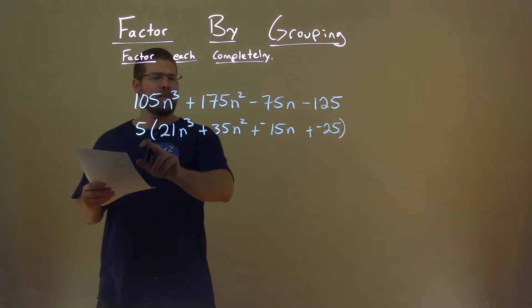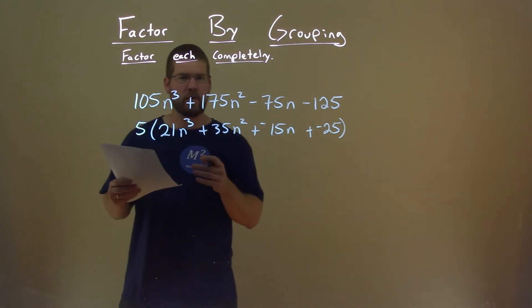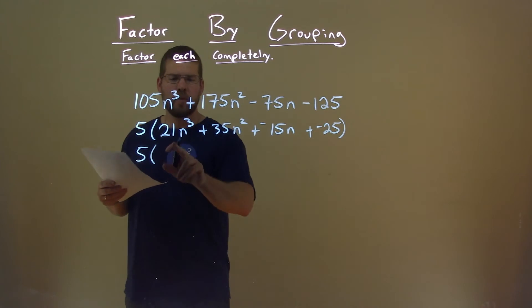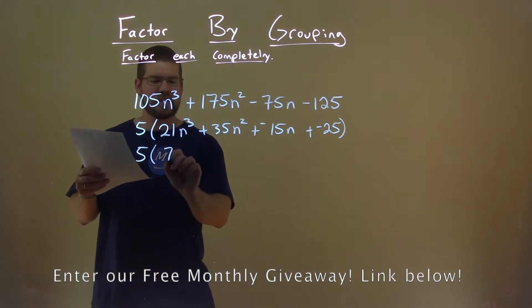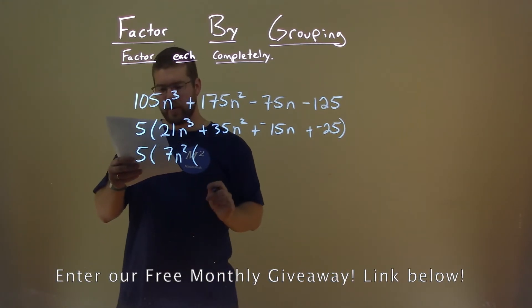Alright, so now that we've pulled 5 out of each one of these numbers right here, let's go deal with our groupings. 5 stays down here, but notice 21n³ and 35n² both have 7n² in them. So if we pull that out from both parts, we're left with 3n and then a 5.